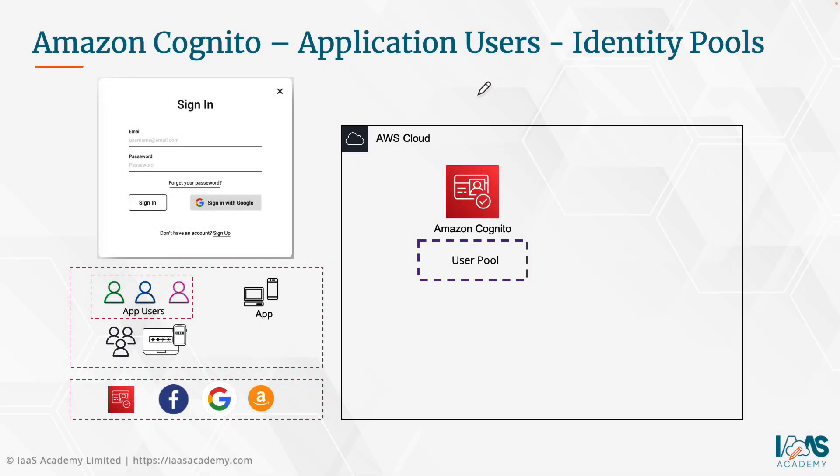Now let's talk about identity pools. With Amazon Cognito's user pool handling authentication for users accessing your application, identity pools allow you to create identities, assign them to users or guests, and authorize them to receive AWS credentials to access backend services. When a user presents proof of authentication — such as a trusted claim from a SAML 2.0 identity provider or a social identity provider — you associate that user with an identity in the pool. The identity pool then retrieves temporary credentials from the Amazon Security Token Service to access backend services.